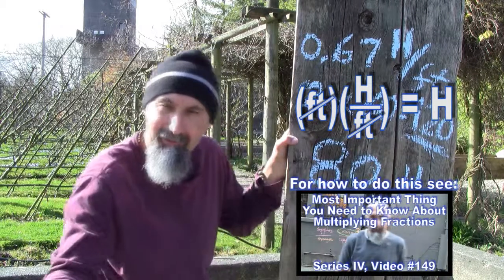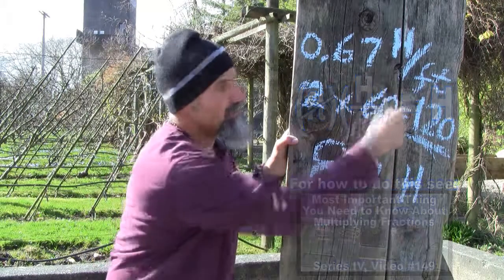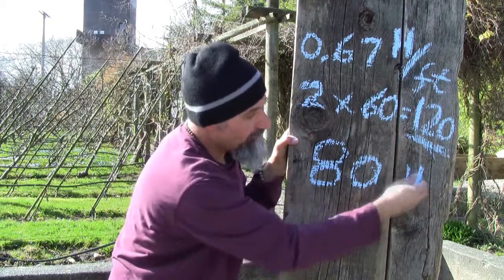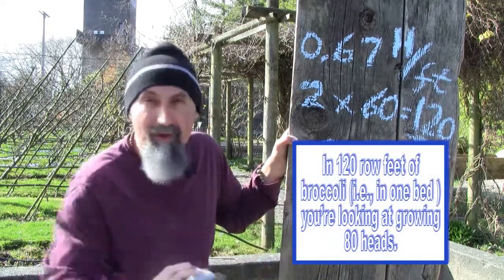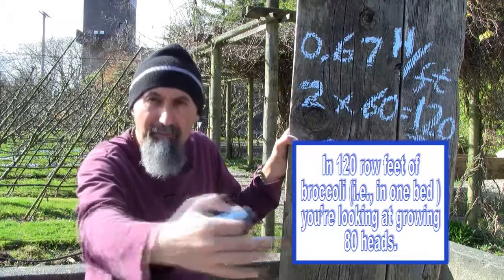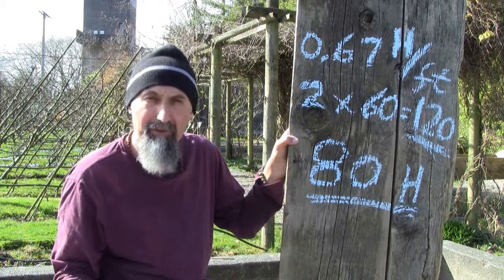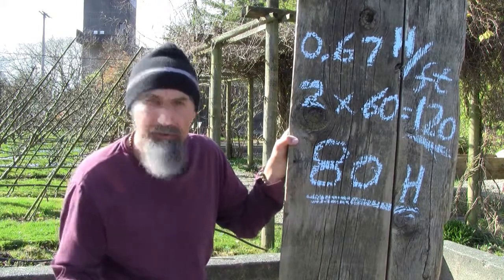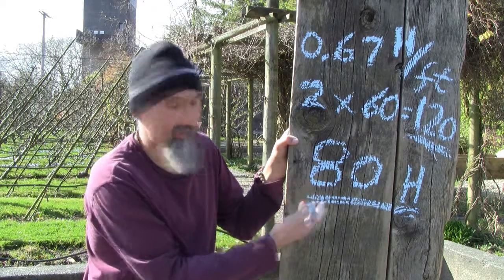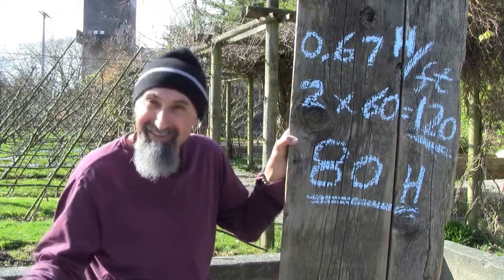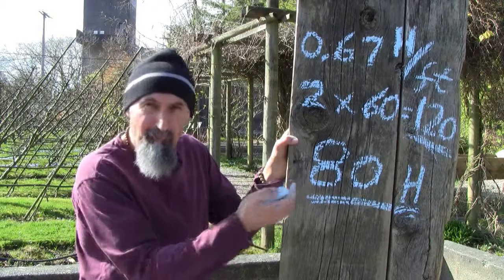Thinking about the units: you have heads per foot multiplied by feet — the feet cancel each other out, which is something we talked about when multiplying fractions. Once the feet cancel, the only unit left is heads — which gives you 80 heads of broccoli for one bed dedicated entirely to broccoli. That's the type of calculation you do to figure out your expected yield, because things change with the weather, bugs, and other factors.